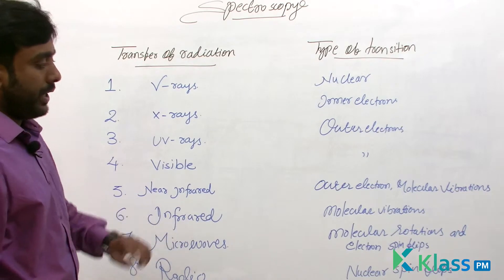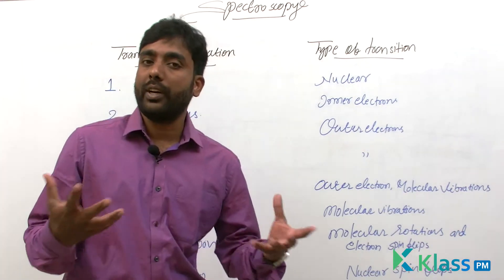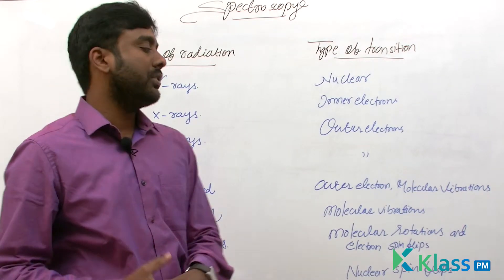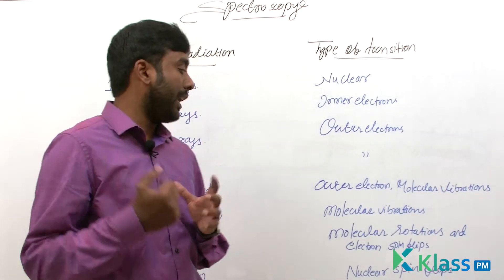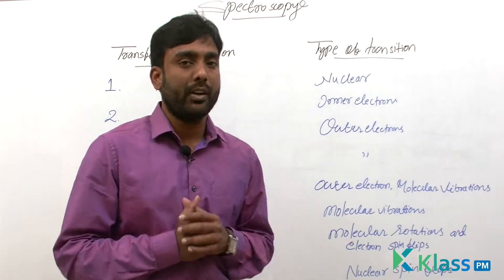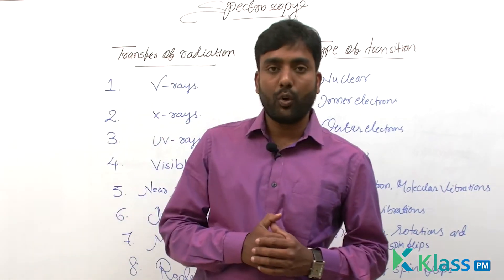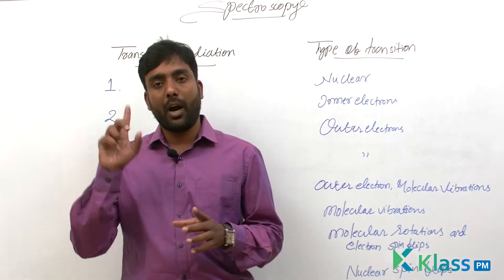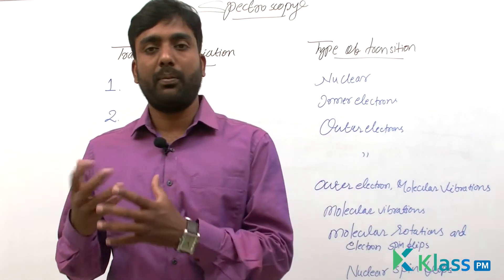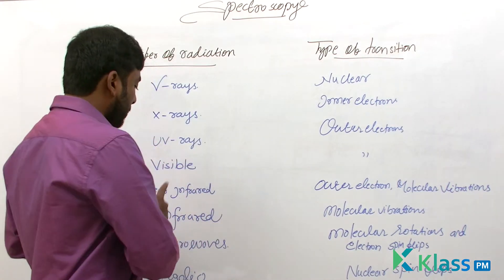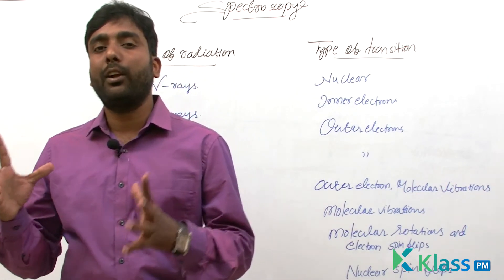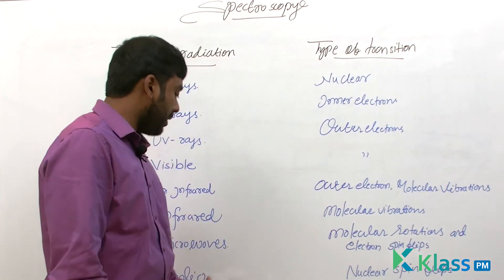Infrared rays cause molecular vibrations. Microwaves cause molecular rotations as well as electron spin flips. We know that electrons have two kinds of spins — clockwise spin and anticlockwise spin, shown with upward and downward arrow marks, with values of plus one-half or minus one-half. So microwaves transmit electron spin flips along with molecular rotations.